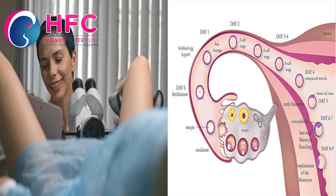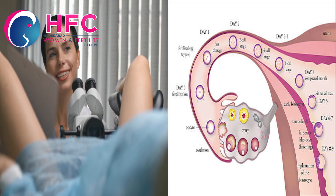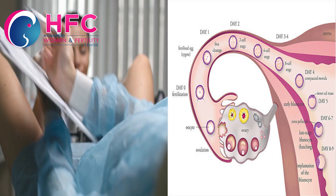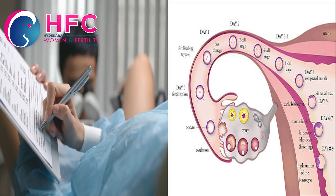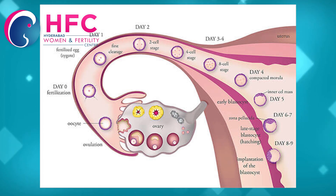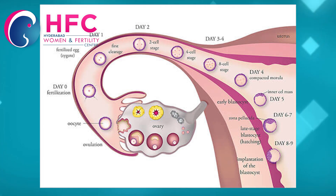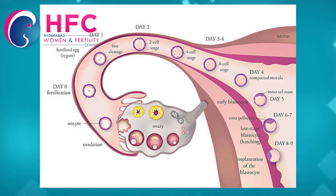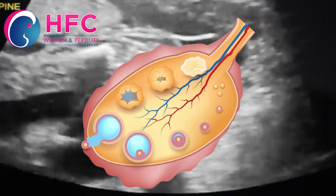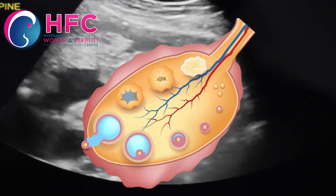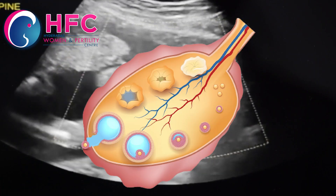We do a scan and I can assess the follicle. The follicle is not the egg directly — the follicle contains a bag, like a sac, and the egg is floating inside it. We don't need to check the egg directly; we need to check the follicle, which sits in the ovary.